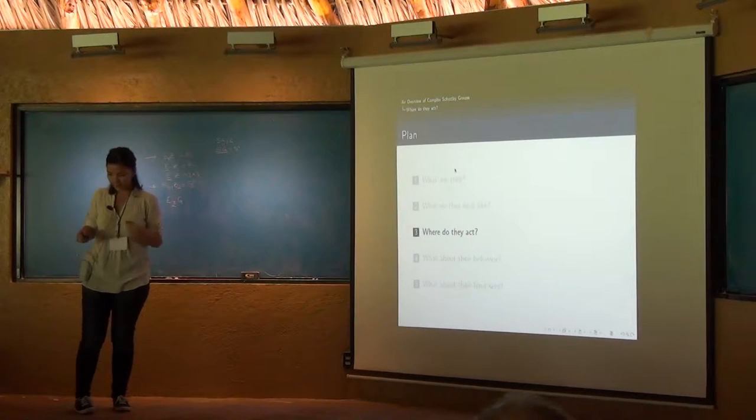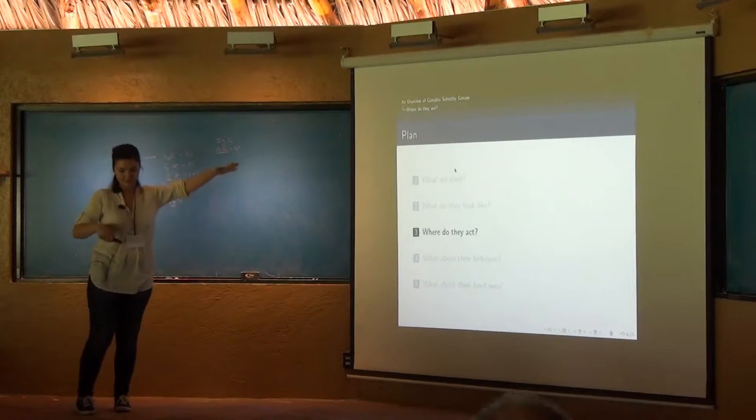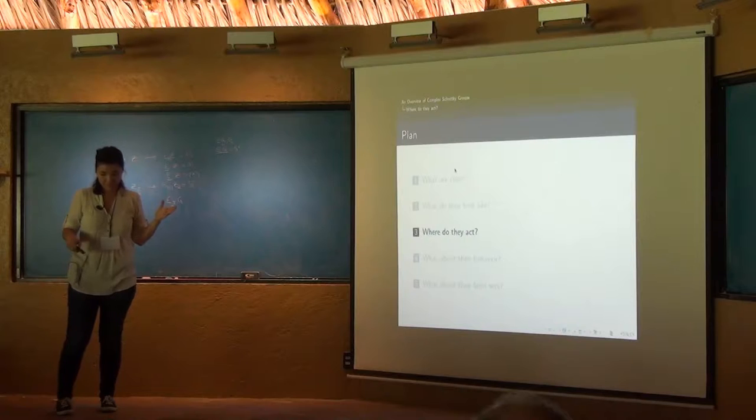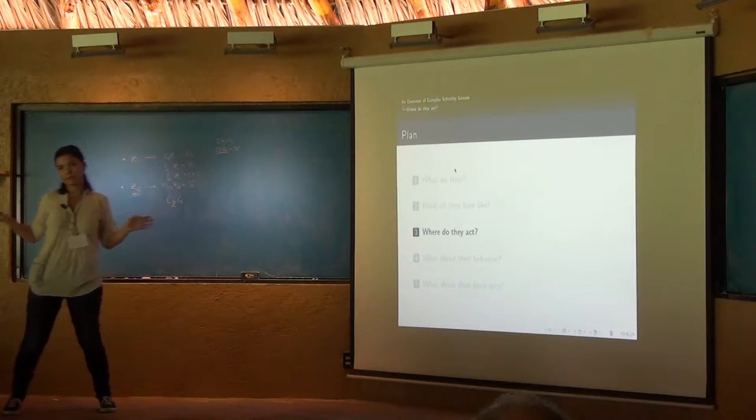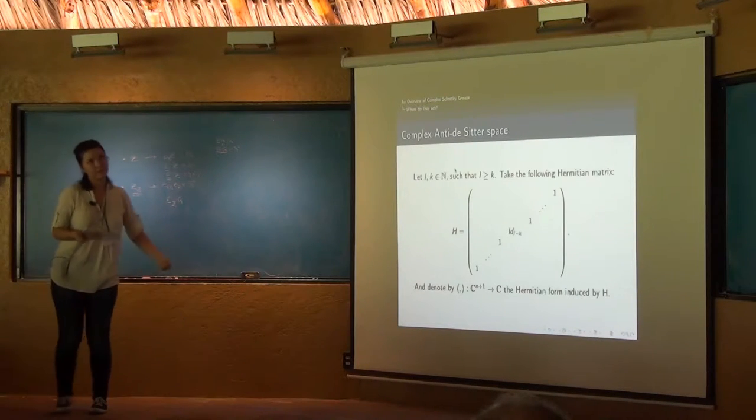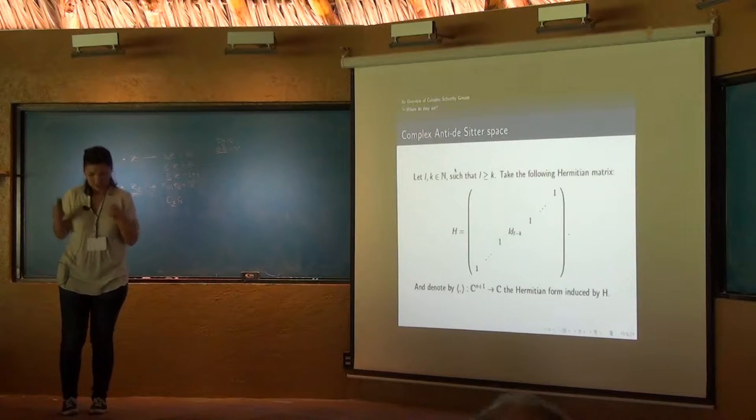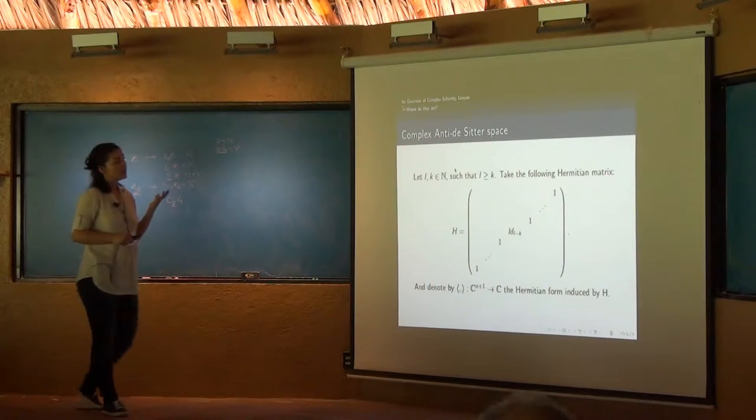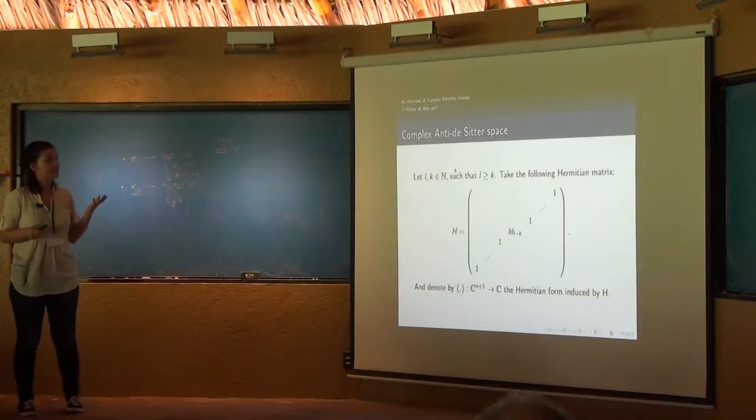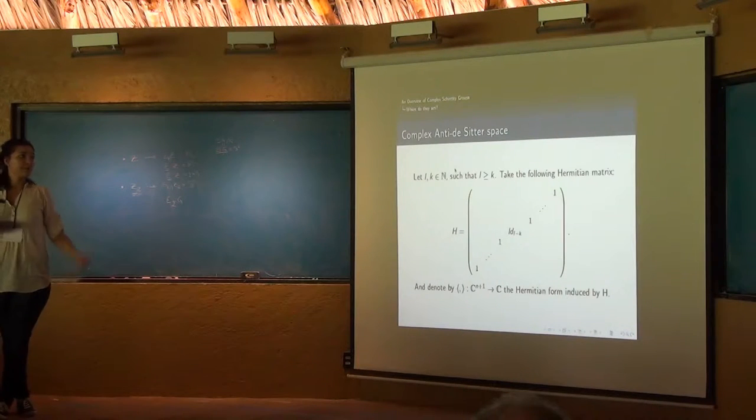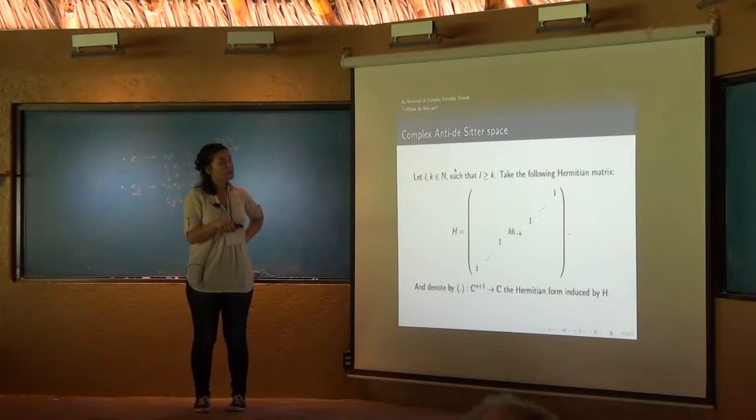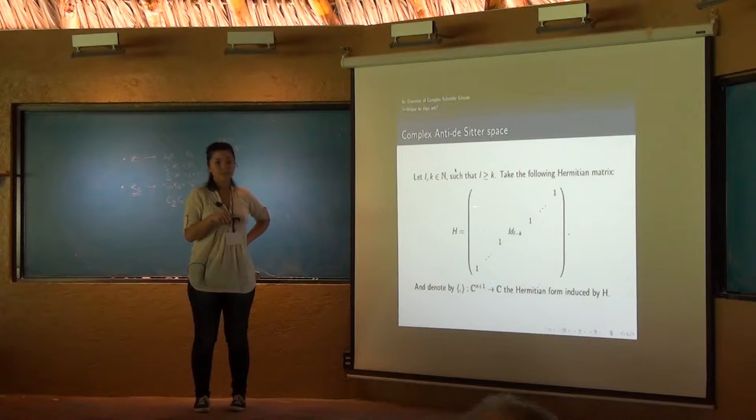So where do they act? In this work, and I forget to mention that it is a joint work with Carlos, Angel, and Meira Mendez all of this Institute. In this work we define a new space that is not in another place and we call it the complex anti-de Sitter space. I will give the construction so you can make some idea of what it is. So we take L and K some natural numbers such that L is greater than K. Then the following Hermitian matrix, take this one where this is the identity. So we have two blocks of size K and one block of size L minus K, so the complete size is K plus L, right?